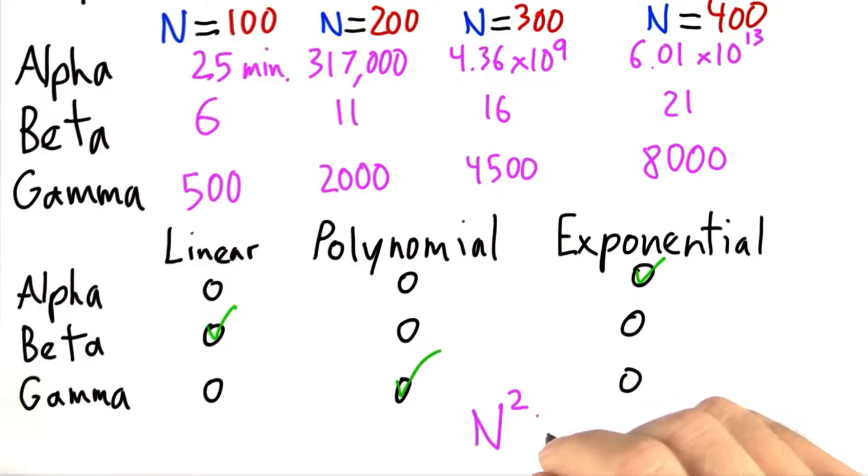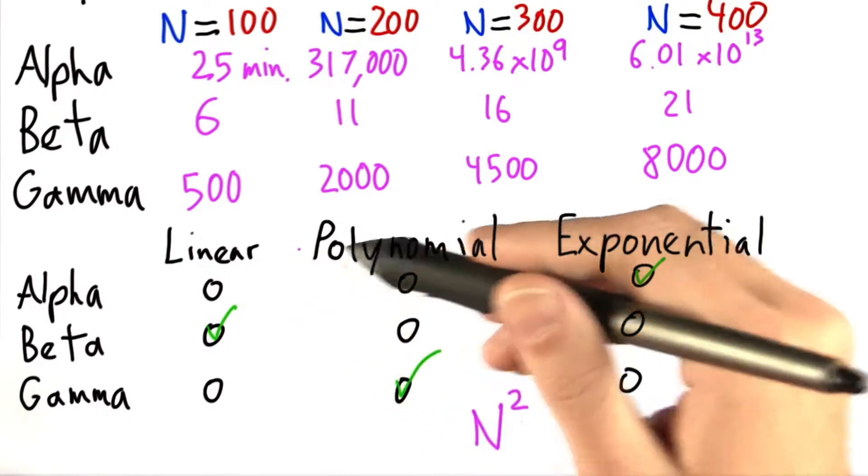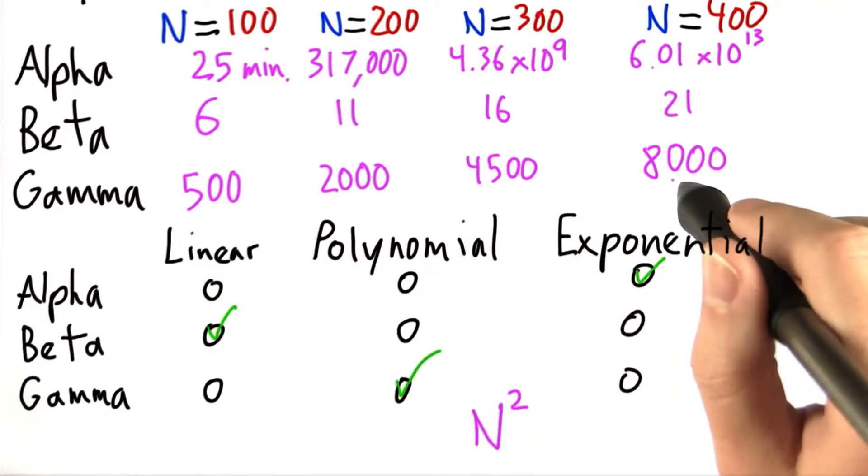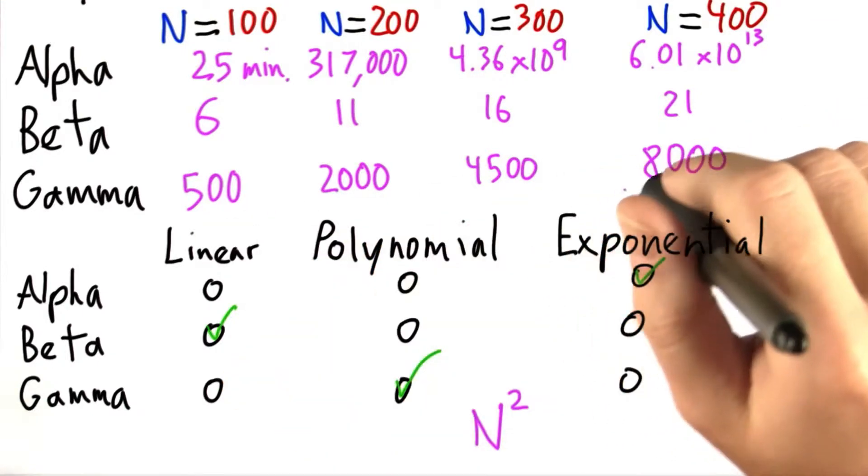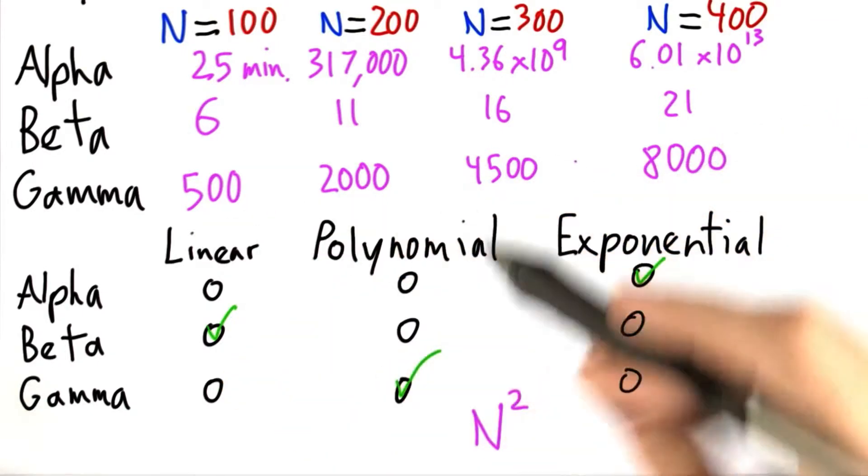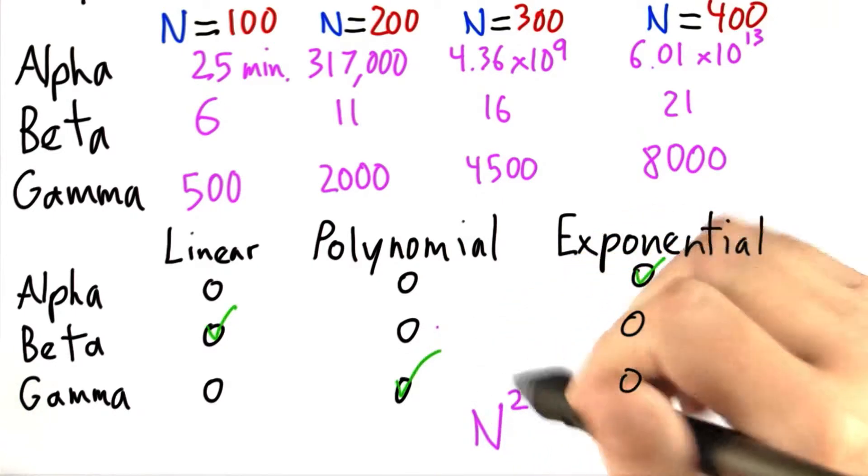And N squared is really the lowest polynomial running time you are probably going to get that isn't linear. And it definitely dominates gamma, at least for the instances that we are looking at. So I would definitely say that gamma is polynomial in running time.